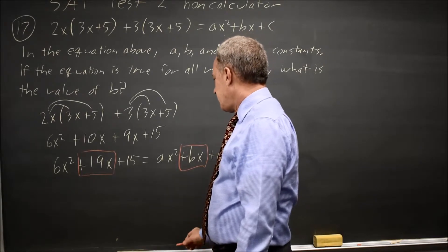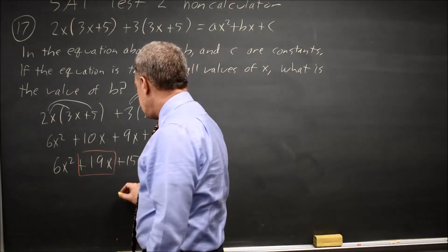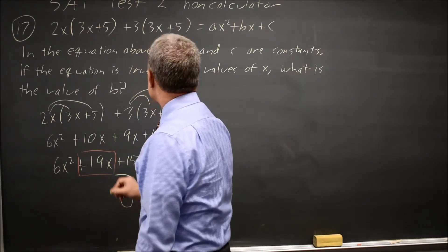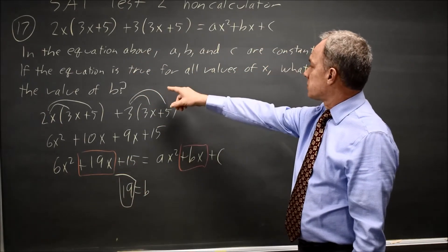So 19x equals bx, which tells us that 19 equals b, and that's what they're asking for in this question. What is the value of b?